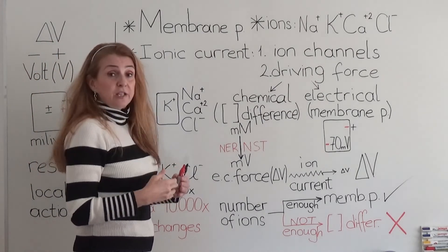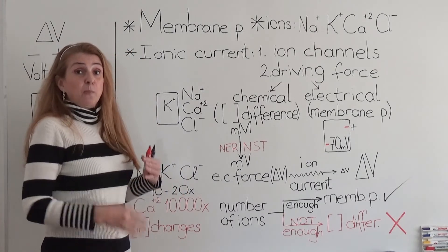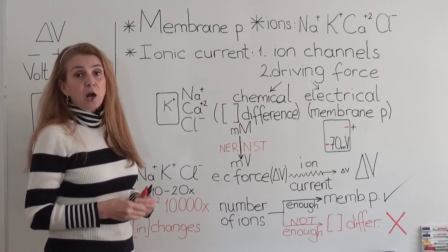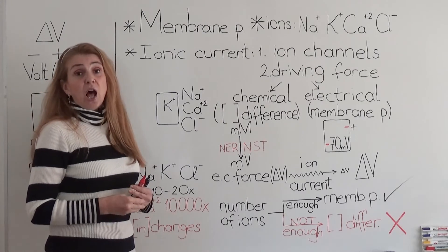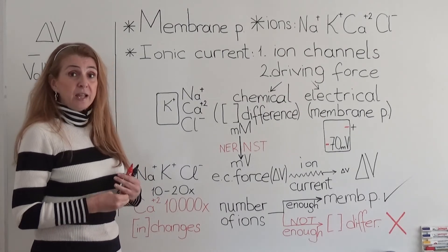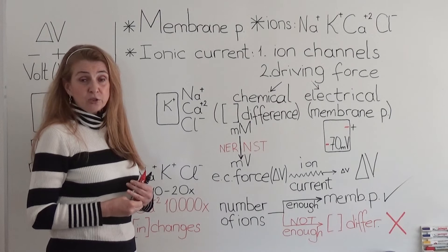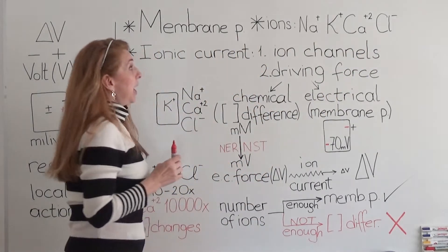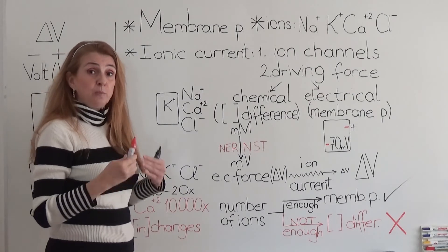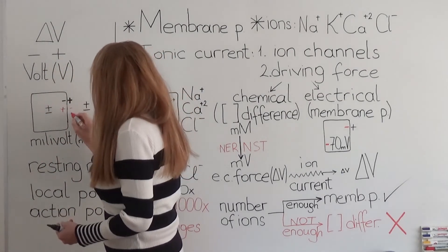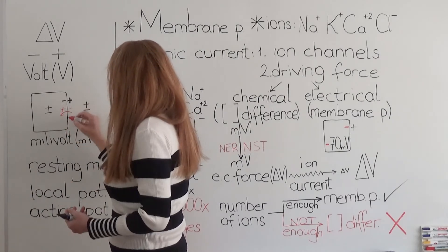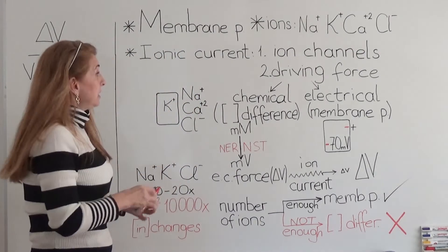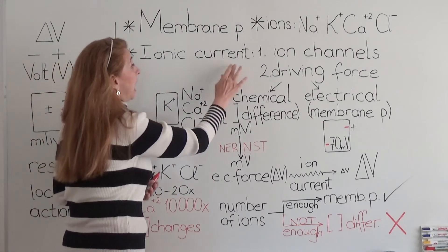The positive and negative charges that produce these bioelectrical potentials — also called membrane potentials — are carried by ions. Ions are positive or negative charged atoms or molecules. The ions responsible for membrane potentials in our body are sodium, potassium, calcium, and chloride. To produce membrane potentials, these ions must be able to pass through the membrane — going into or out of the cell. This movement through the membrane is called an ionic current.